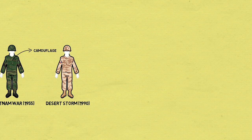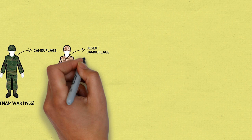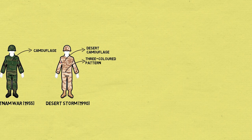Desert Storm 1990: The Army had adapted a range of camouflage patterns. These patterns included the woodland and three-colored desert patterns. The uniforms also featured some stylistic changes such as reducing the size of the collar.